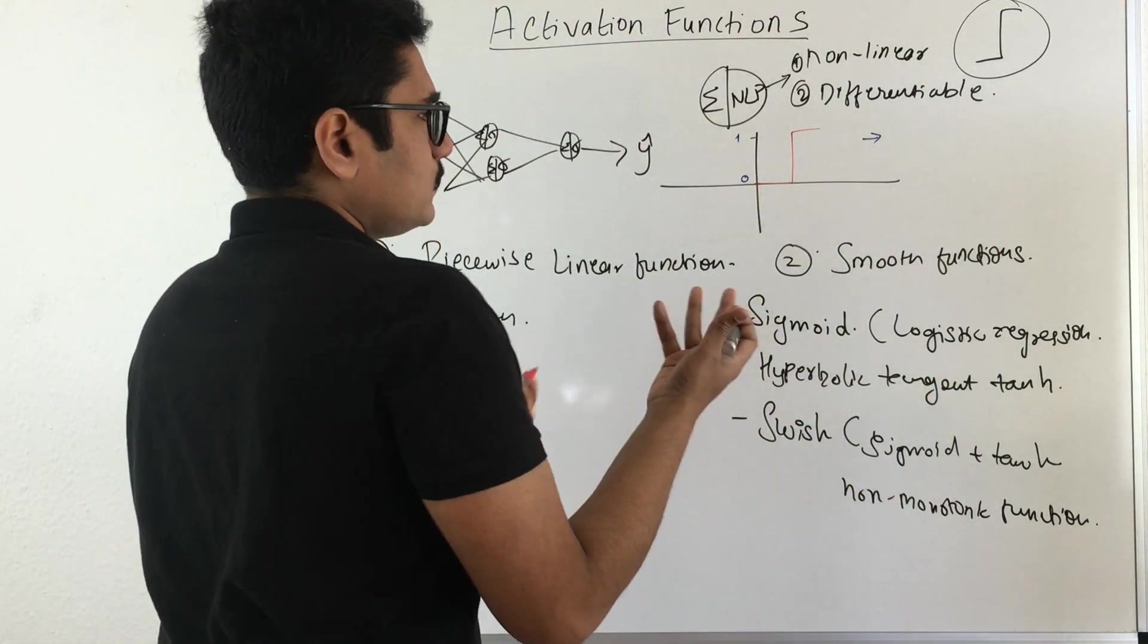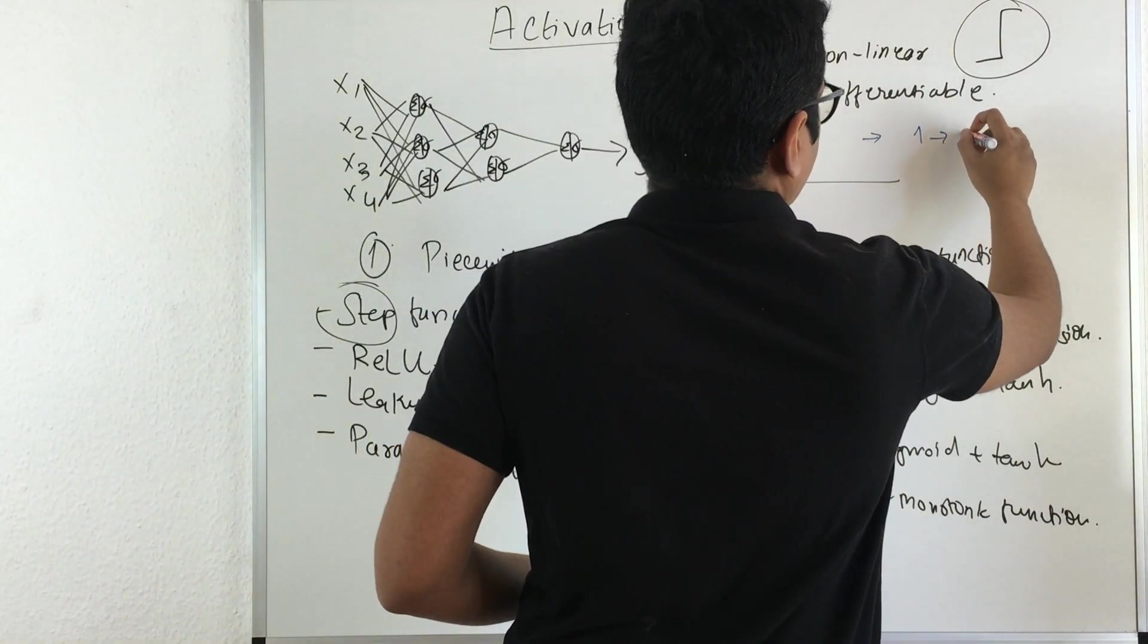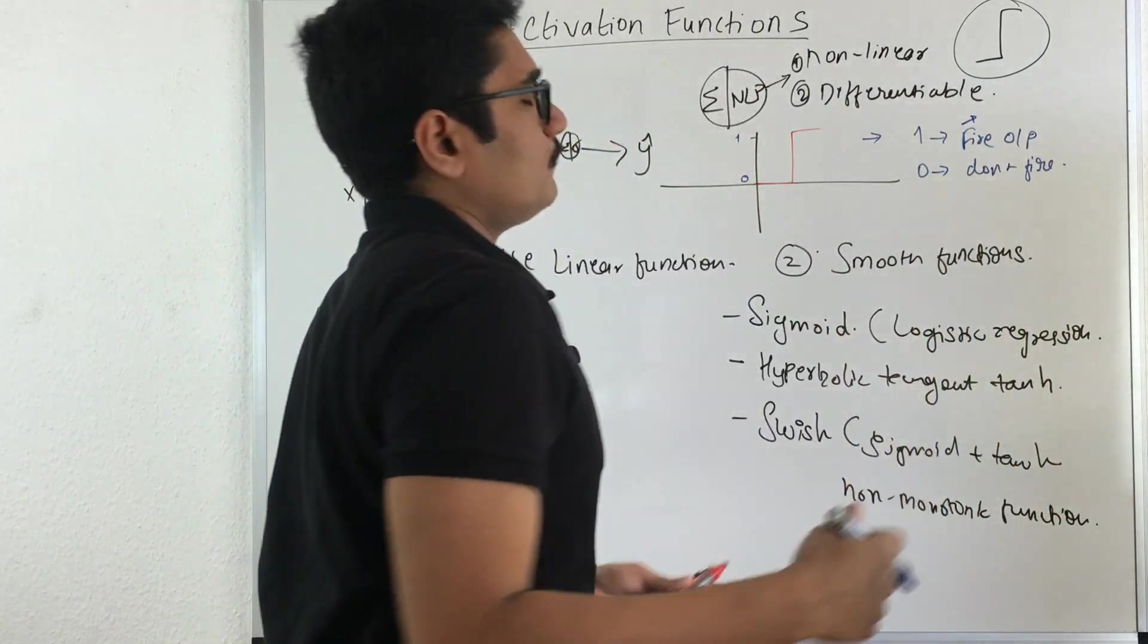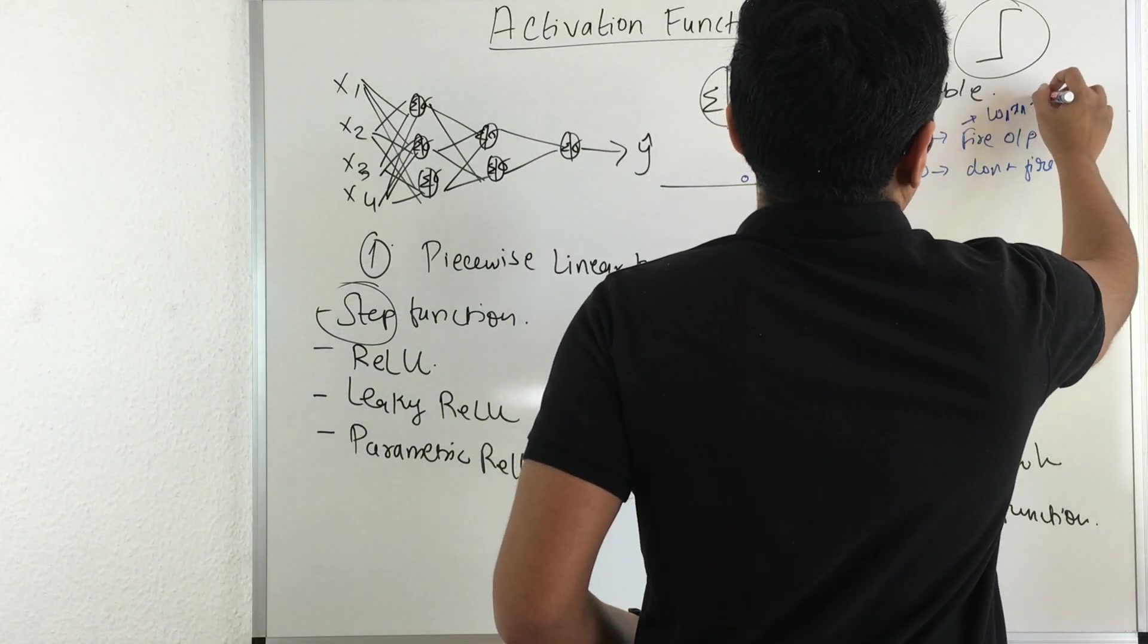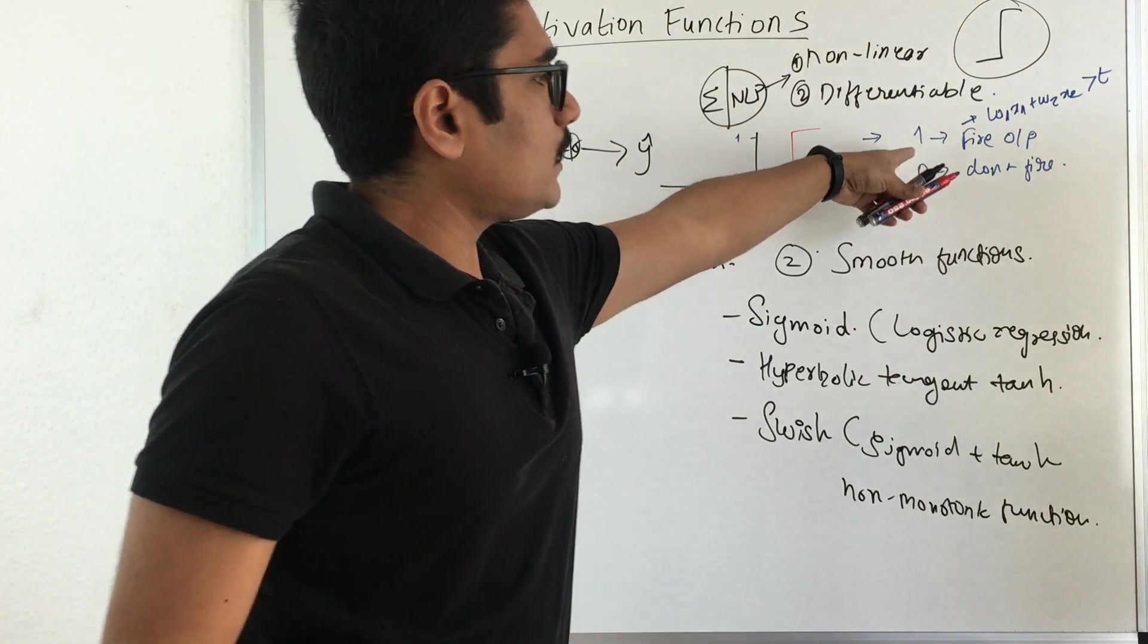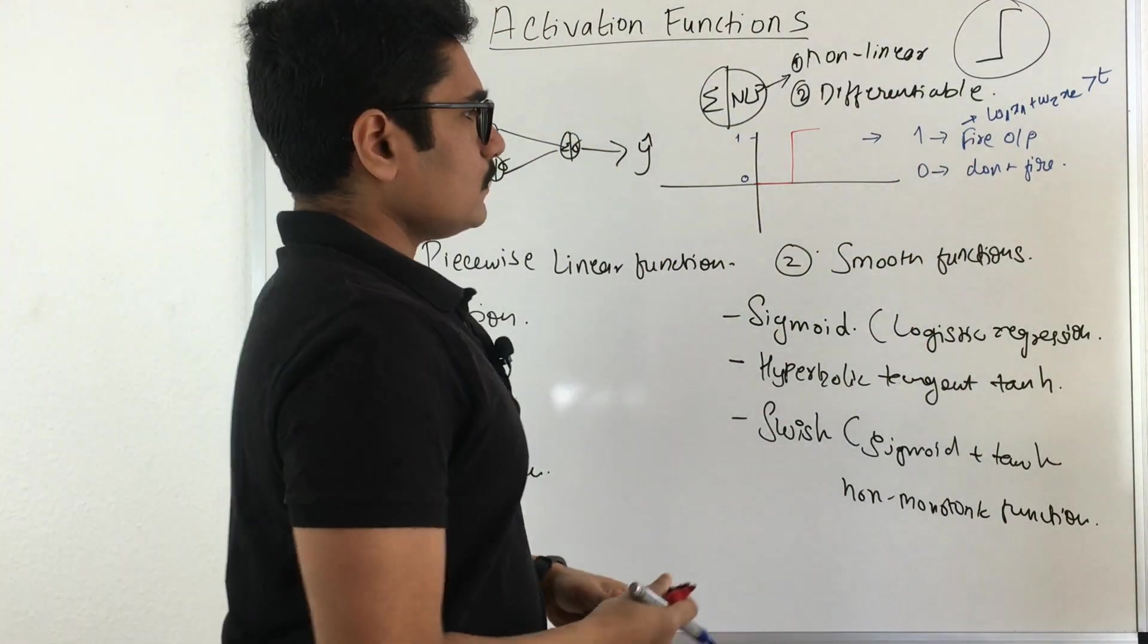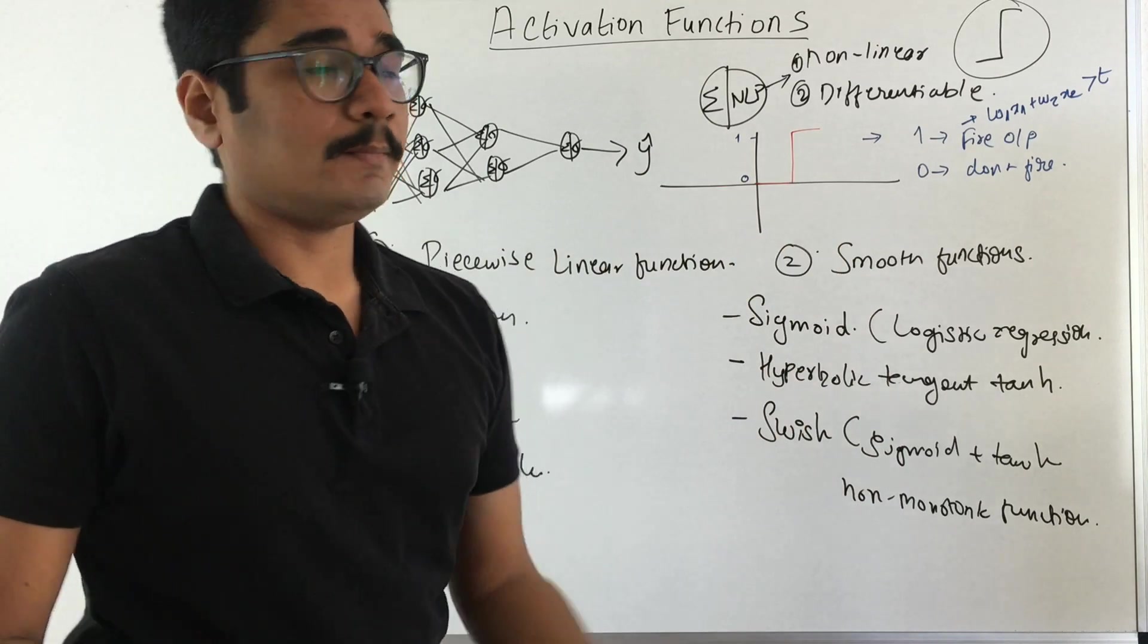One means you will fire the output and zero means you don't fire. Firing is done if that particular linear computation exceeds some particular threshold. So say it is W1X1 plus W2X2, and if it is greater than some threshold, then you trigger a 1. Else if it's less than that threshold, you don't fire any function or output. You can say there is not much particular activity being carried out by your step function.